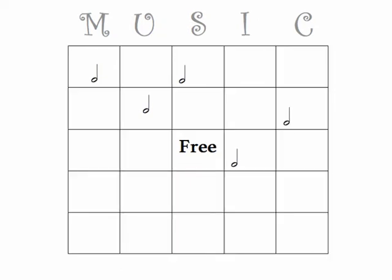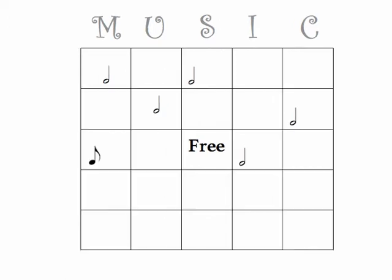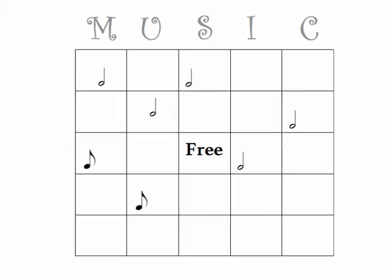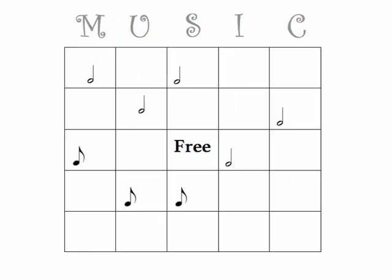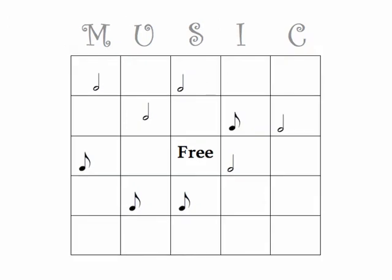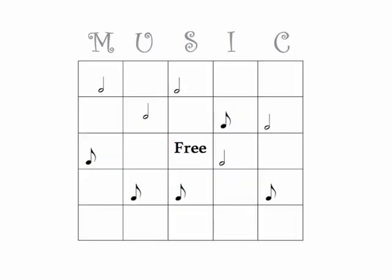Notice they can go anywhere you want on the bingo card. Then you're going to find another note. In this case, we'll take the eighth note, and you put the eighth note in the M column, the U column, the S column, the I column, and then the C column.